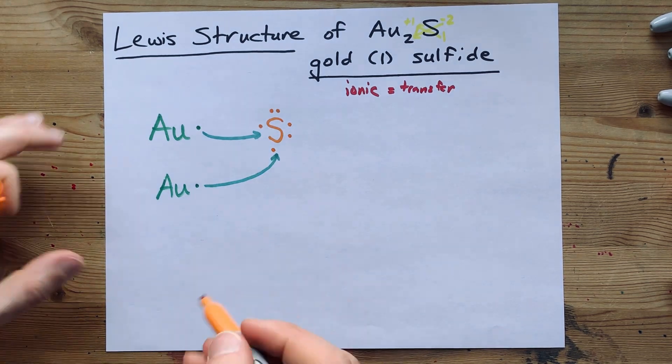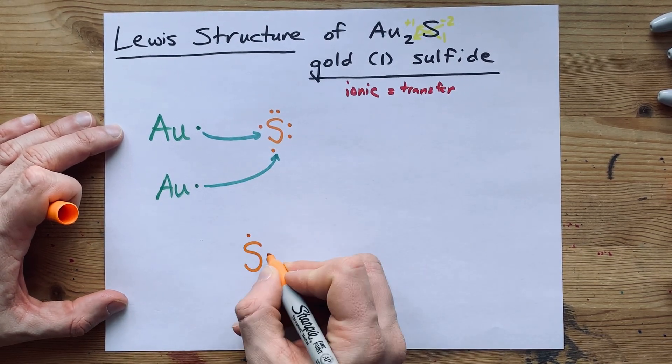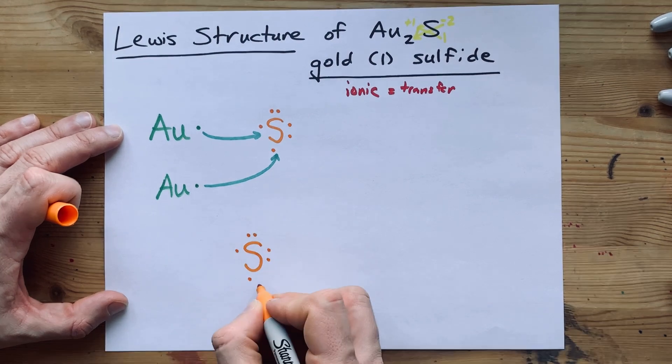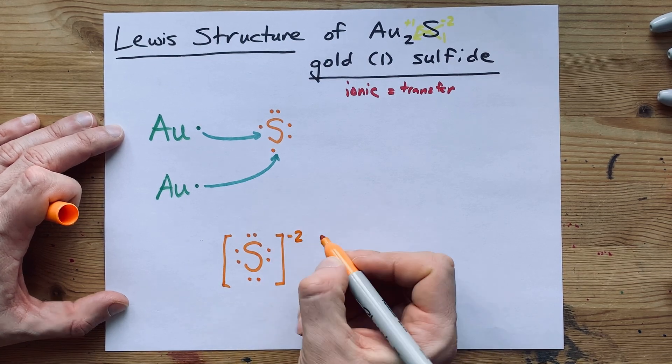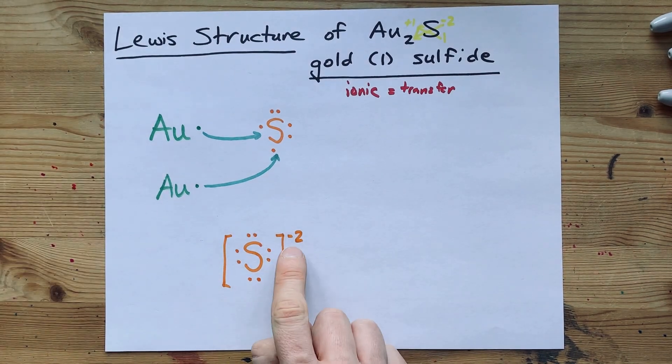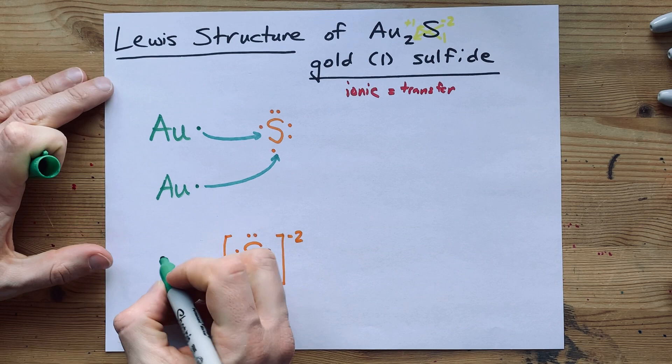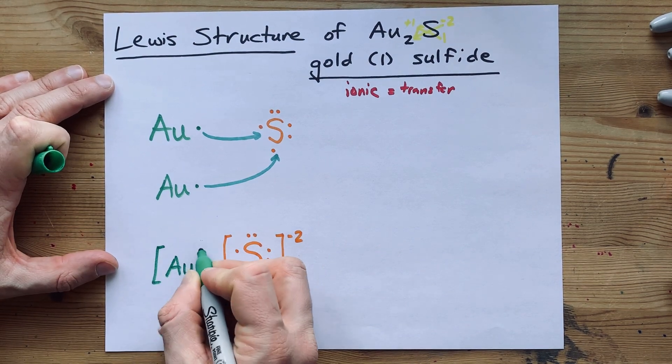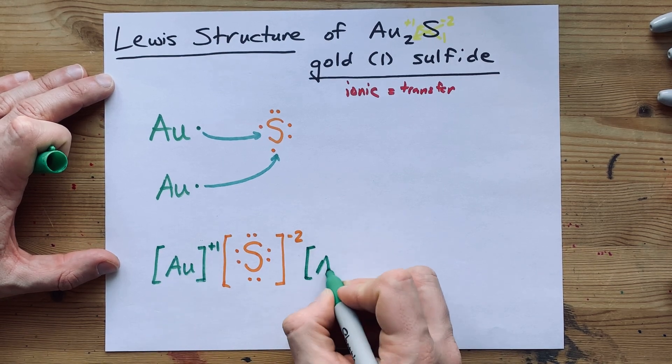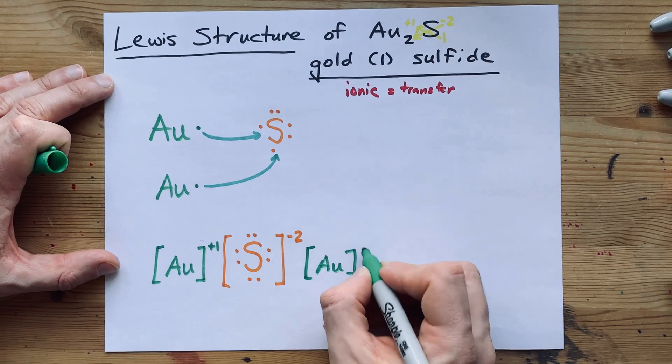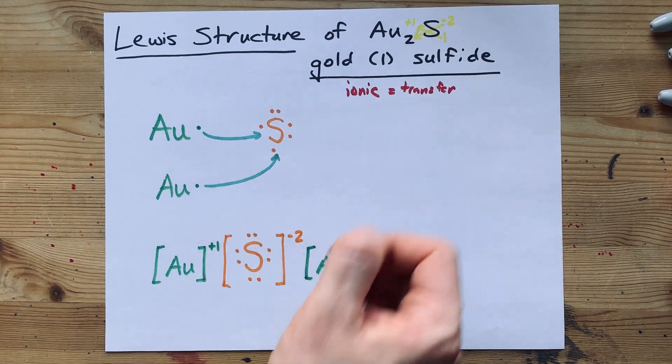To draw the final Lewis structure, because I've just drawn here the transfer, I'm going to draw my sulfur with one, two, three, four, five, six, seven, eight electrons. That's six plus the extra two that it stole from golds. And because it's two extra electrons, I'm going to draw the minus two charge there. Then, you have two gold atoms that gave up one electron each. So, give it a charge of plus one and draw two of them, because you needed two golds to contribute their electrons. This is the completed Lewis structure for gold(I) sulfide.